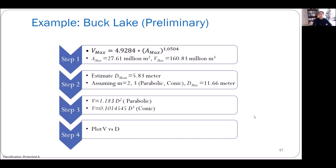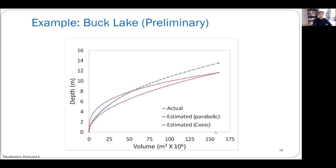Let's give an example. We estimate the depth-volume relationship for Buck Lake. The equation for maximum volume is applied — the maximum surface area for that lake is about 27.61 million square meters. Using the equation, maximum volume becomes about 161 million cubic meters, and mean depth is about 5.83 meters. Assuming m equals 2 (parabolic) or m equals 3 (conic), you find the maximum depth and corresponding volume equations. Plotting v versus d: the blue line shows the actual depth-volume relationship, the maroon line with squares shows the parabolic estimate, and the maroon line with triangles shows the conic estimate. When you have no other information available, this can be a useful method.